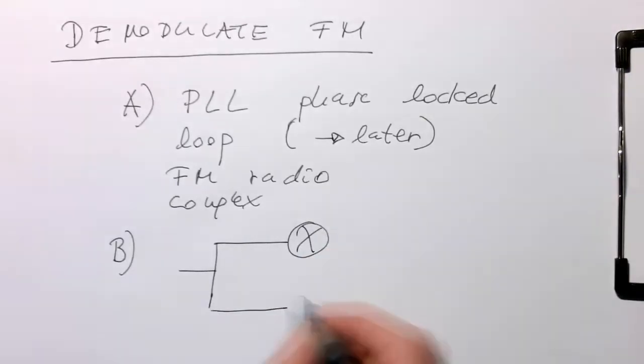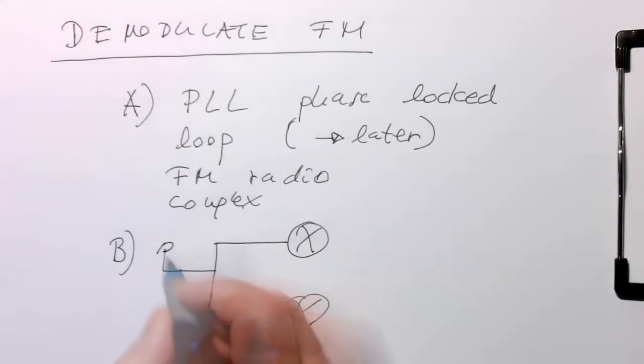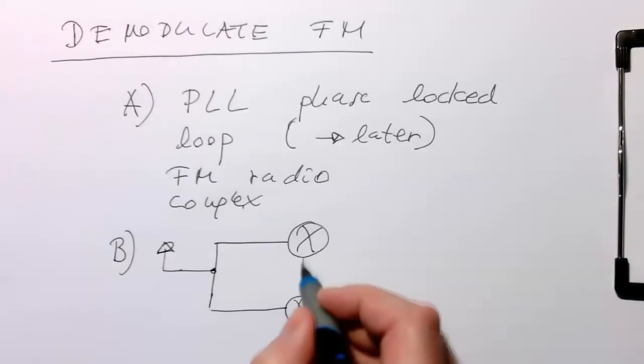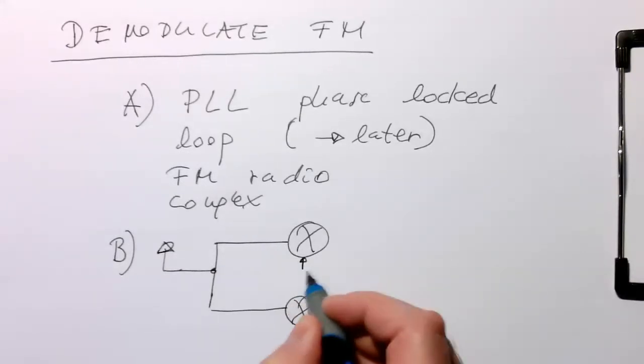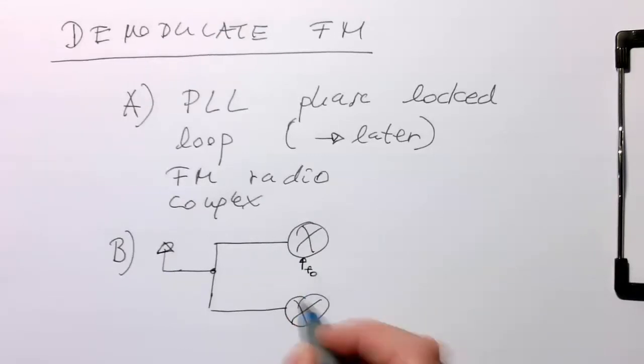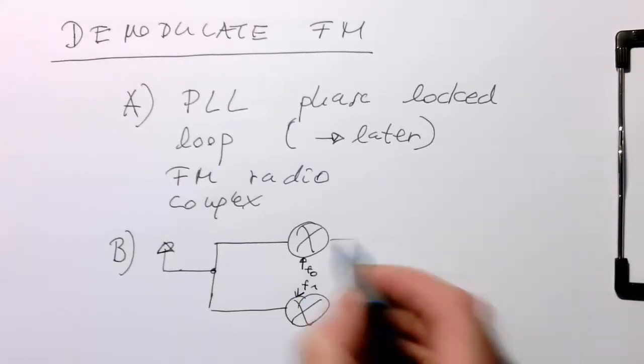We multiply our incoming signal, that's our input what we receive, and multiply this by F0. On the other side, we multiply by F1 and do low-pass filtering.